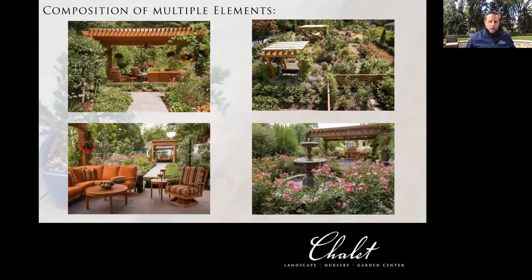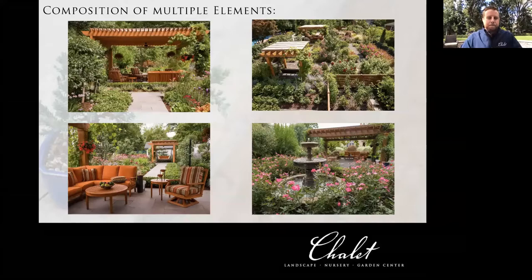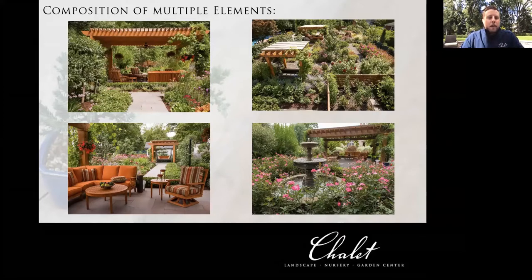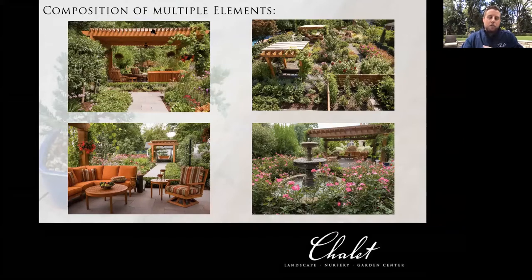I wanted to finish the presentation by showing some photos of the composition of these elements. When you can utilize several of these pieces all at once, that's when you're going to get a really showstopping space — the total is greater than the sum of its individual parts. This property has a lot going on: a beautiful large pergola with very large beams to support its expanse, with layers of purlins and joists. A fan in this nice gathering space. And looking beyond the main pergola space, there's a smaller pergola with a little swinging bench area.